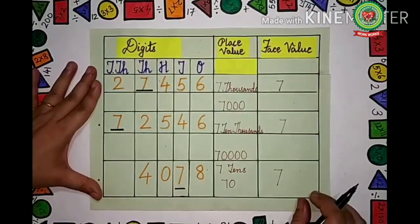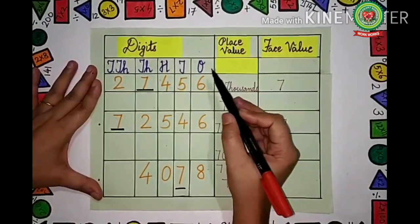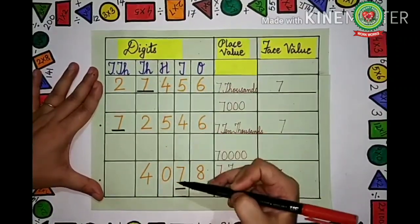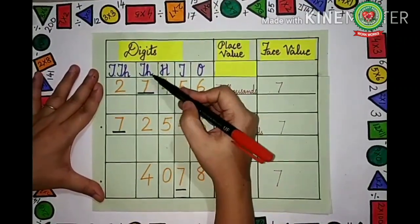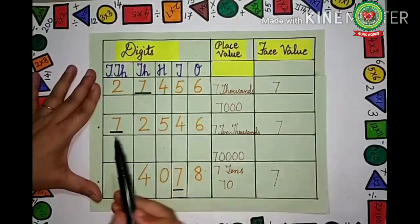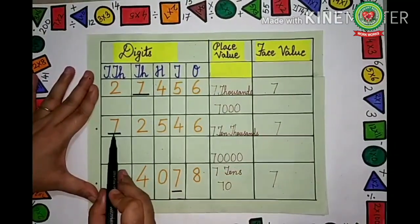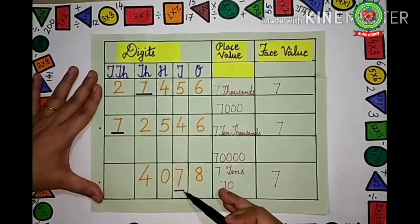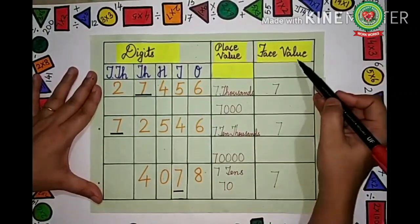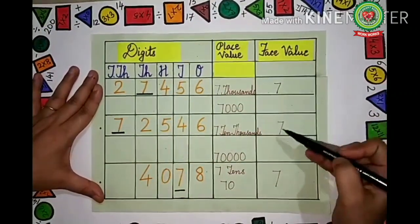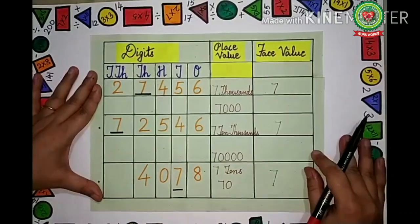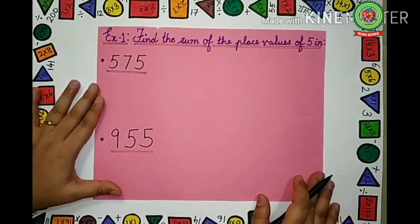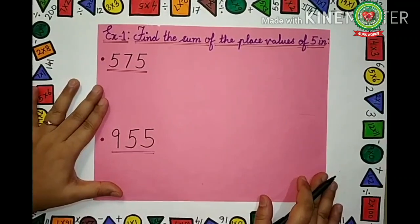Kids, notice one thing: the place value of 7 is changing in every number. In the first number it is in the 1000's place; in the next number it is in the 10,000's place; then in the next number it is in the 10's place. But the face value of 7 remains the same. Now let us take some examples from your Magical Maths book.